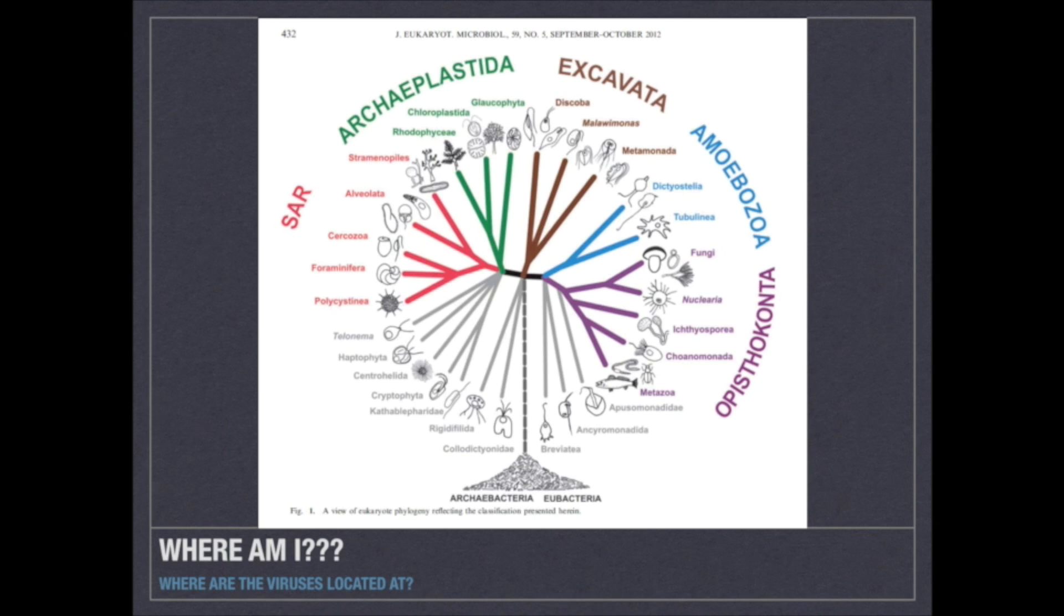Inside Eucaria, there are five main subclassifications: Opistoconta, Ammoibosoa, Excavara, Archeplastida, and Saar. Question. Where am I? If your answer was Opistoconta, you are right. Now, if you pause this video and take a look at the organisms in the circle, you may notice that viruses are not there. So, if they are not within the three domains of life recognized by biologists, then are they living or not living?